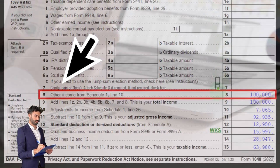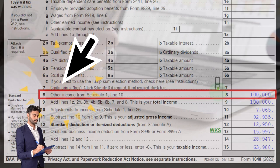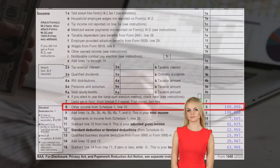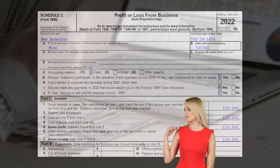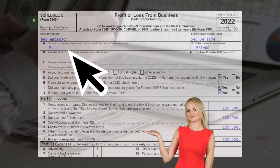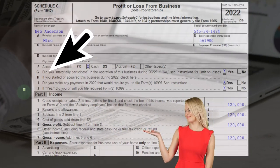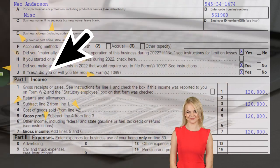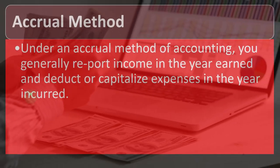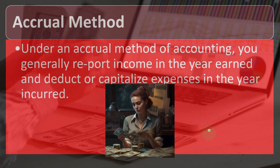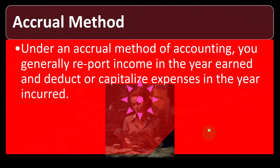This is the first page of the Form 1040. We're looking at line number 11, Schedule C flowing into the Schedule 1, flowing into the first page of the 1040 here on line number eight. This is a Schedule C — profit or loss from business — where we can see the income and the expenses, in essence an income statement. Speaking of income statements, let's take a look at the accrual method.